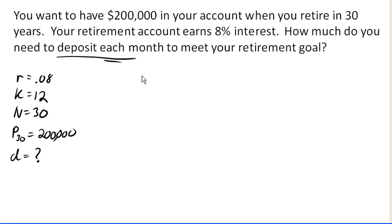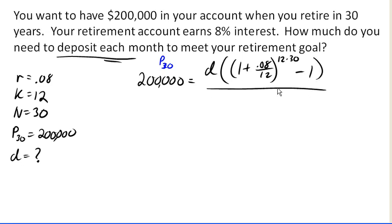So using my formula, I can go ahead and set up that 200,000 will need to equal, right, because that's my P30. So 200,000 is going to equal d times 1 plus r over k to the k times n minus 1, all divided by r over k.